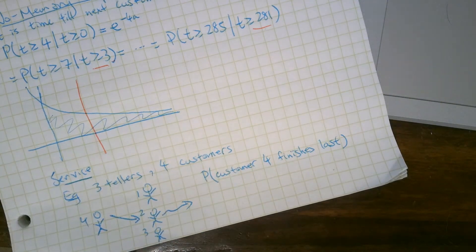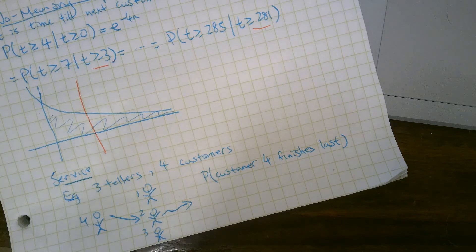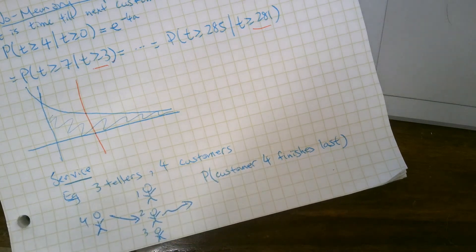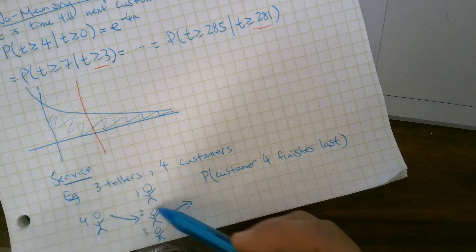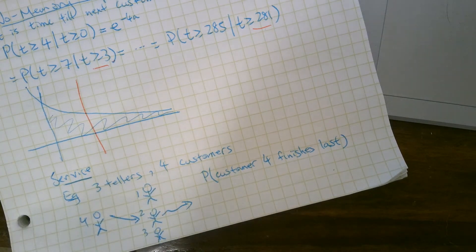The no-memory property says we start from scratch here. Now these three customers are being helped equally. So any three could, with equal probability, finish last.